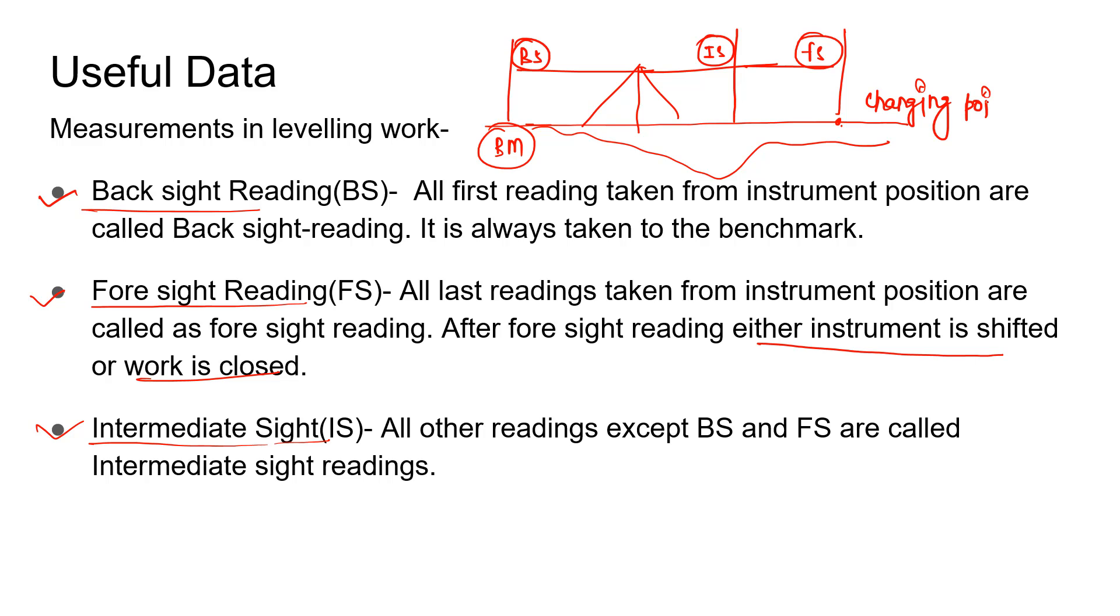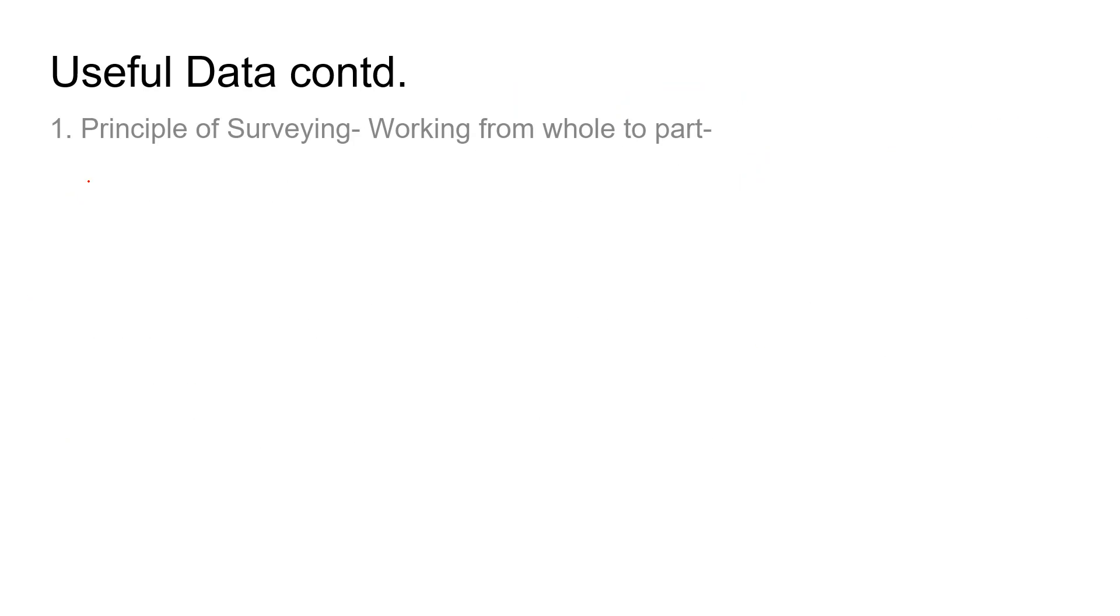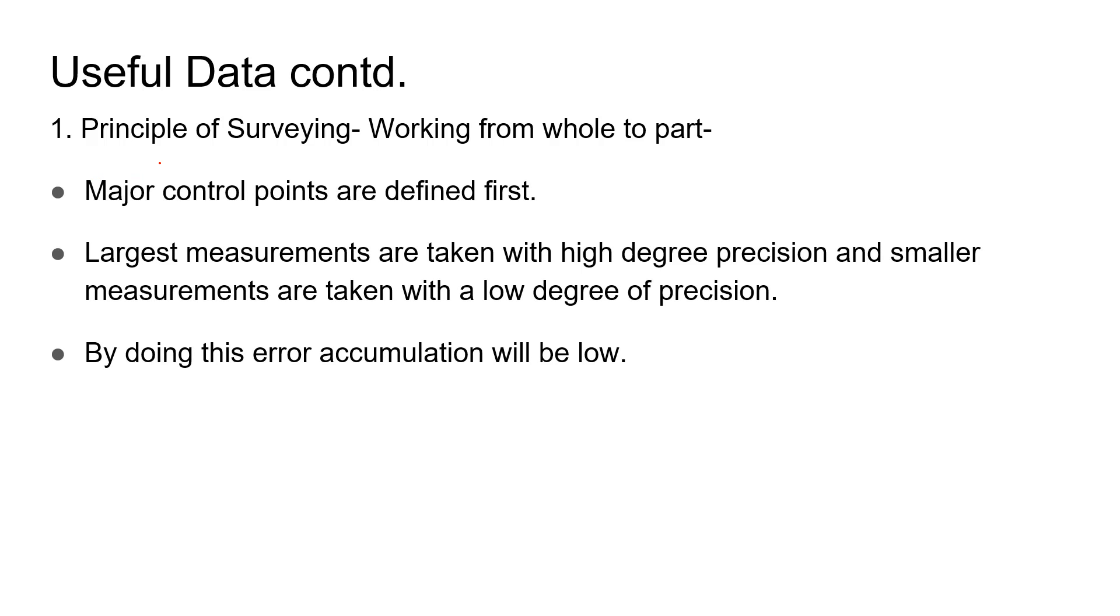The point FS is also termed as a changing point where we shift the instrument or close our work. Coming to the second statement about principles of surveying: we normally discuss two principles. The first one is working from whole to part.